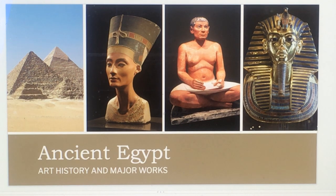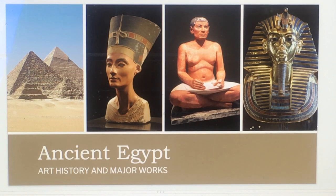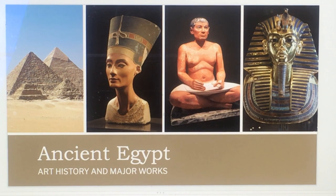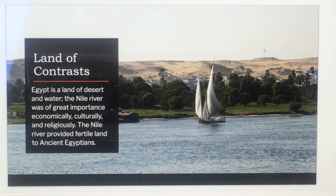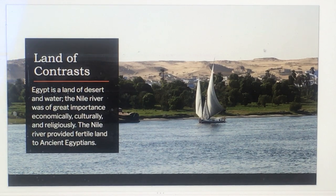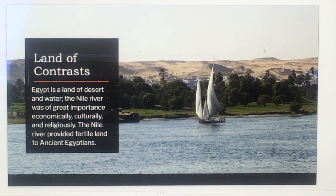Hello, this is Trish Triamfo Sullivan, and I'm here to talk to you today about art history — Art 1A class. We are looking at ancient Egypt today, so let's take a quick look at the major works and art history of ancient Egypt. It's a land of contrast: desert and water. The Nile River basically runs straight through a desert and was of amazing importance economically, culturally, and religiously.